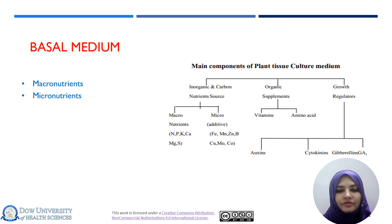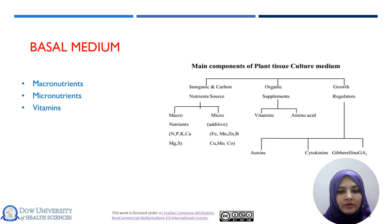Some nutrients are required in lower or micromolar concentrations — micronutrients — such as iron, magnesium, and zinc, which are required for plant growth but in very low concentrations. Other important nutrients such as vitamins — vitamin B1, B6, B12, nicotinic acid — are good sources for plant growth and development and can also be provided in low concentration as part of the basal medium.